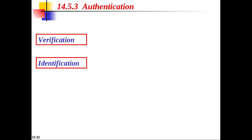Verification is a one-to-one matching where a person's feature is matched against a single record in the database — for example, when a bank needs to verify a customer's signature on a check. Identification is one-to-many matching where a person's feature is matched against all records in the database to find if she has a record — for example, when a company needs to allow access to a building only to its employees.